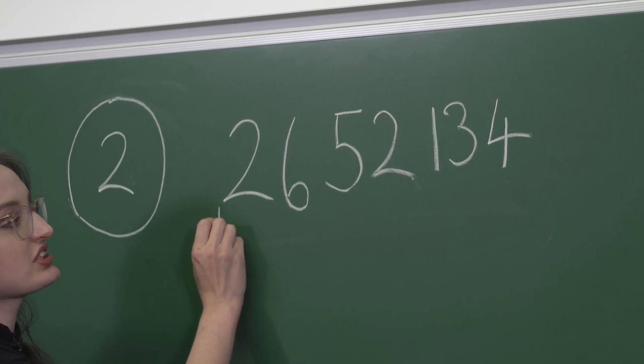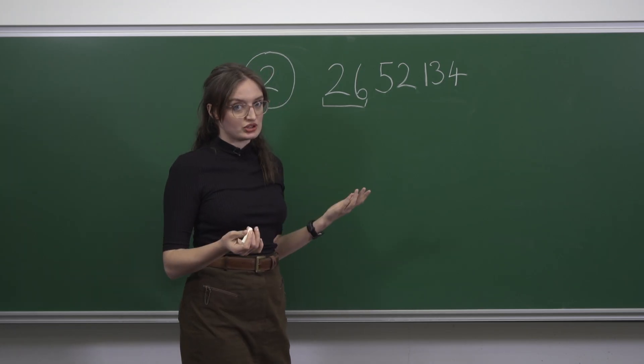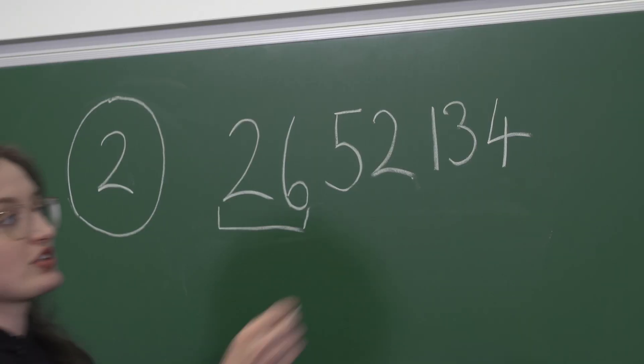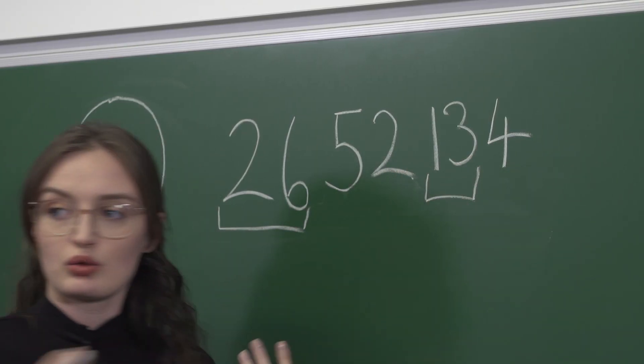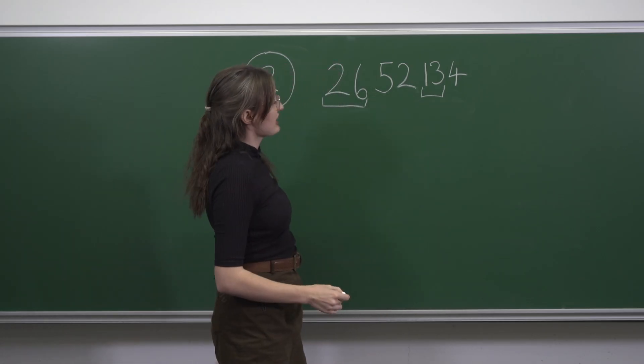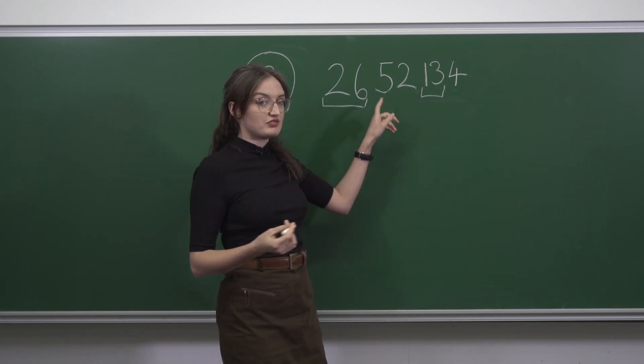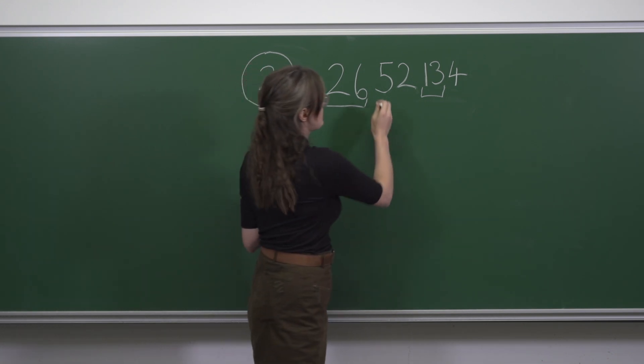So the first two digits, the 26, is 2 times 13. 13 is obviously 1 times 13, and if we think about it for a minute we'll see that 52 is 4 times 13.